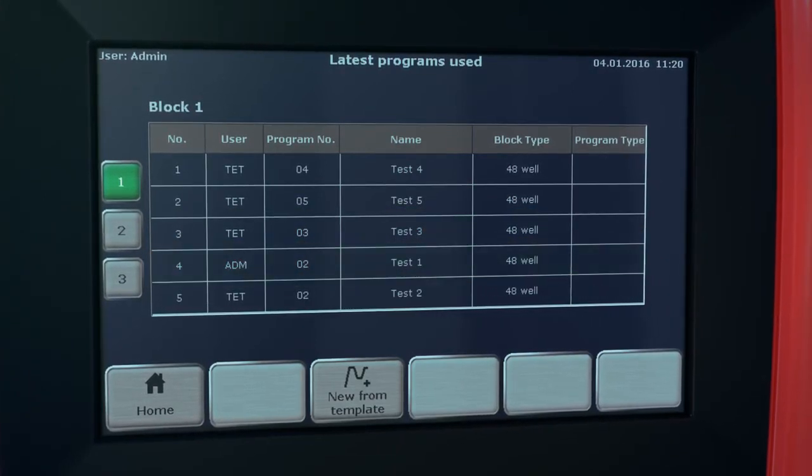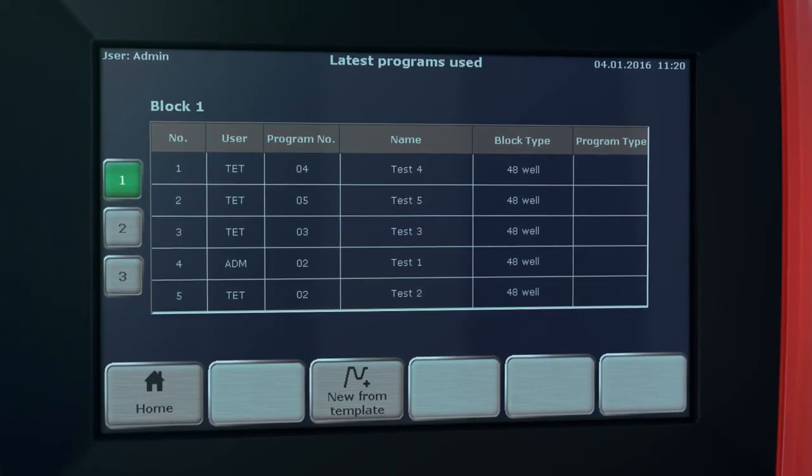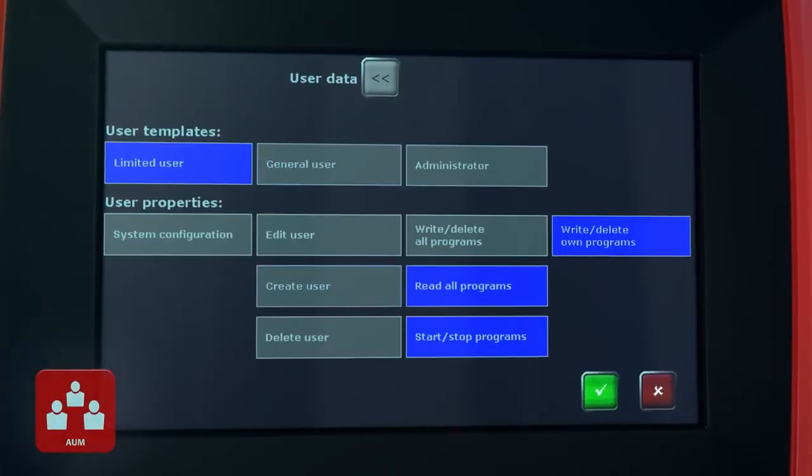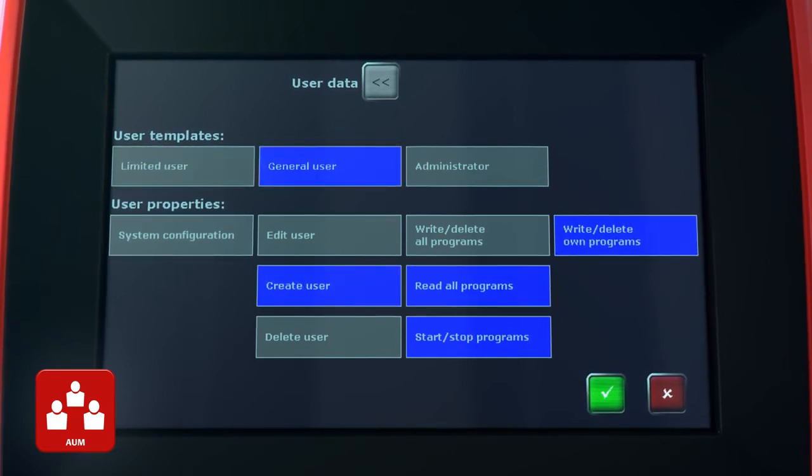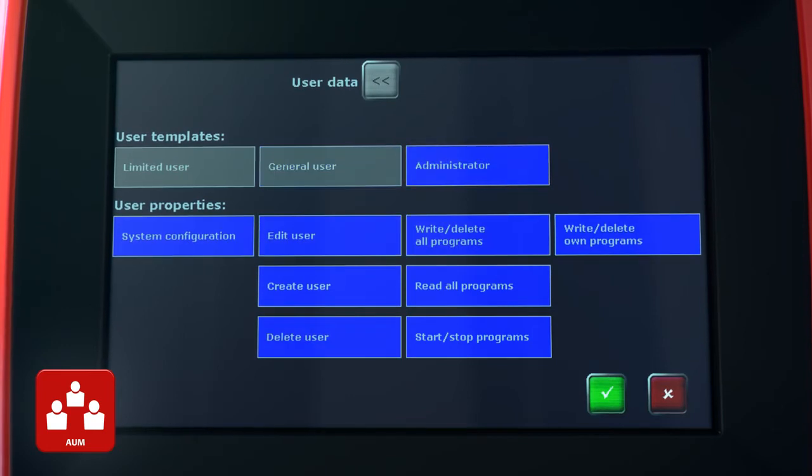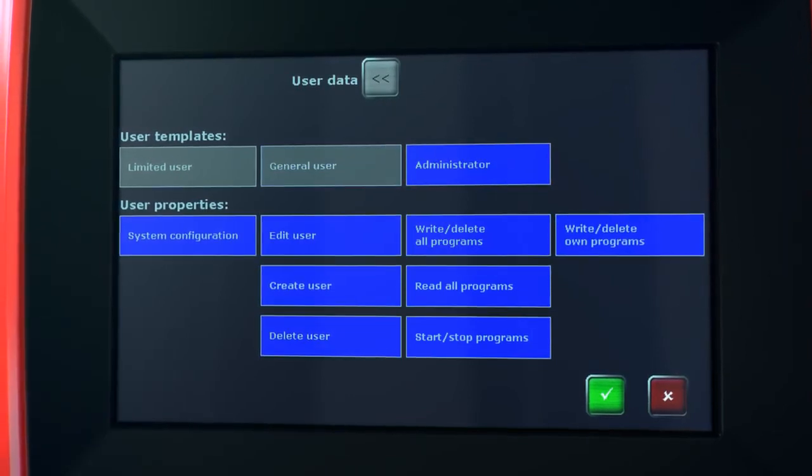The system stores the latest used or edited programs for each user individually. For system administration, the advanced user management tool is used. Three different user levels with different default rights settings are available. The rights settings can be modified for each single user individually.